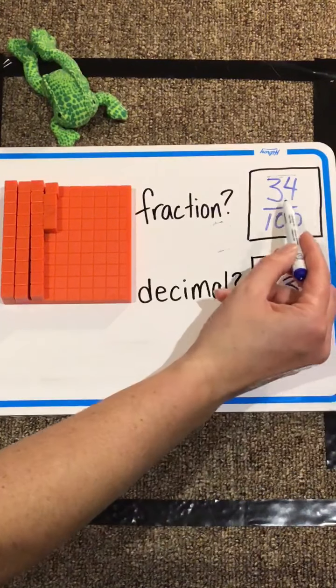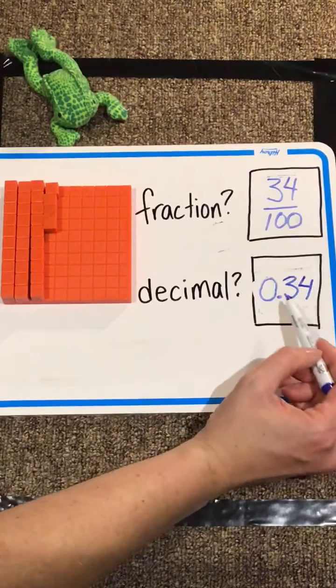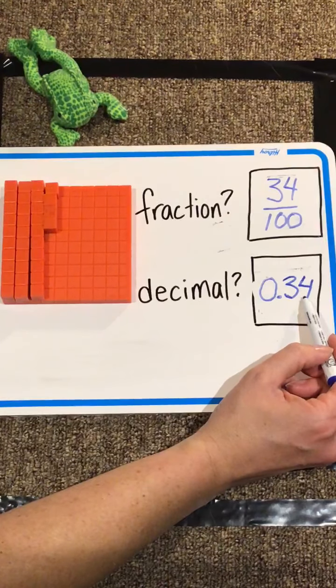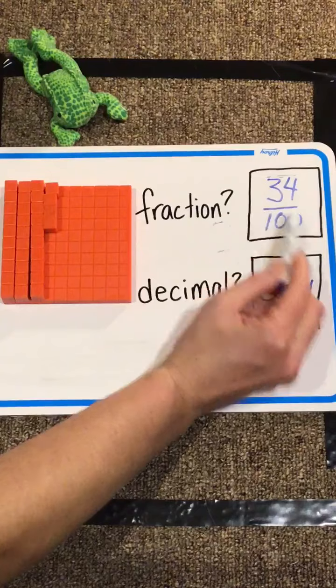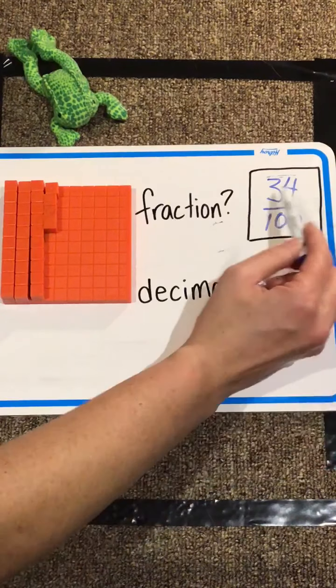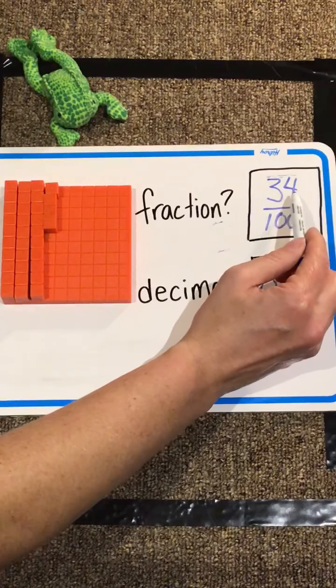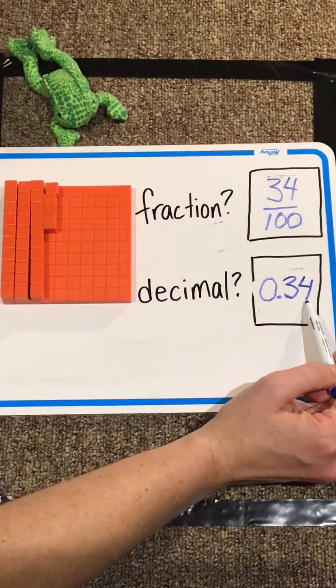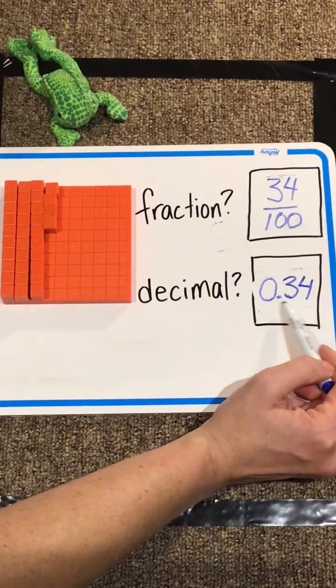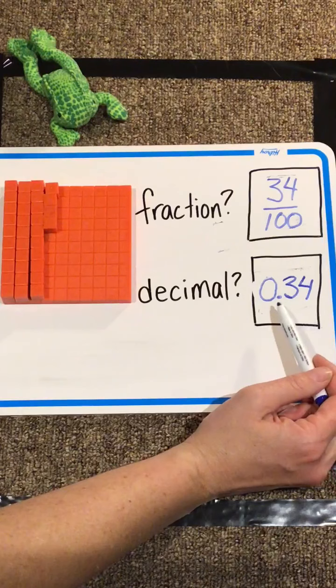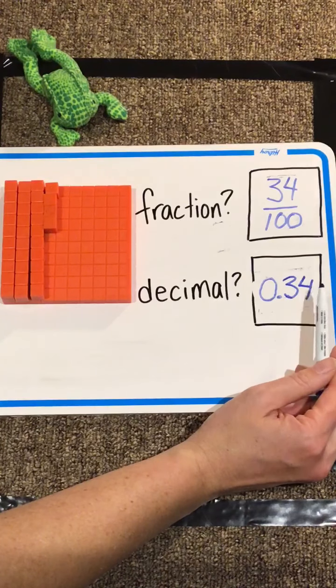So you'll notice we ended up just taking the number thirty-four, and we wrote it to the right of the decimal part. So the second digit ends up in the tenths column, and the smallest number, or the number on the right, not necessarily the smallest number, but the smallest amount of the cake ends up in the hundredths column. So we could say this as thirty-four hundredths, or we could say it as three-tenths and four-hundredths.